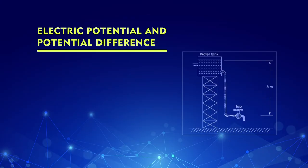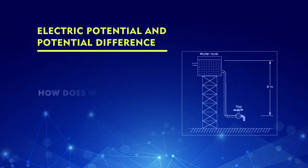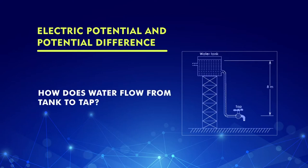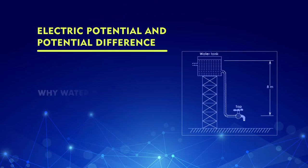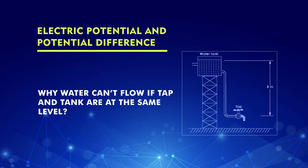Then comes the concept of electric potential and potential difference. Students may not know what potential or potential difference is, or how it affects current flow. But they must have seen how water flows from a tank to a tap. Why is the tank always at a height and the tap below? What causes the water to flow? You can show them a picture and ask questions.